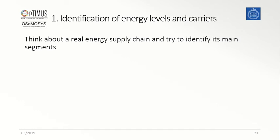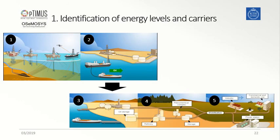In order to identify the energy levels and fuels, it can be helpful to think about typical energy supply chains and to identify what are the main stages that link the primary resources down to the final demand side. Take for instance the oil supply chain represented in this slide. The energy flow starts in picture 1 with the oil platforms, where the primary energy resource — in this case crude oil — is extracted and then loaded on ships to be transferred to the onshore facilities, as represented in picture 2.